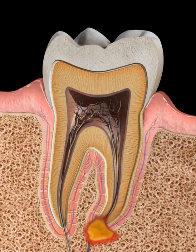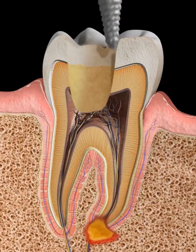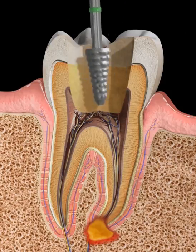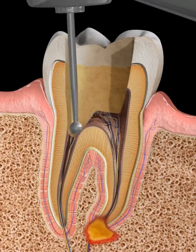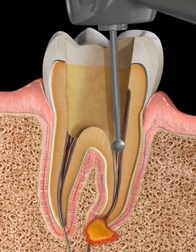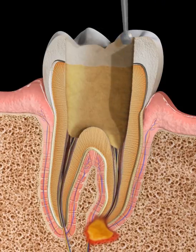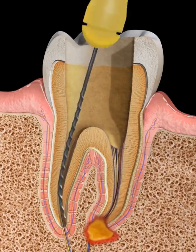The pulp is removed and filing of the inside of the tooth helps to remove any remaining infected tissue. After the root canal system has been cleaned,